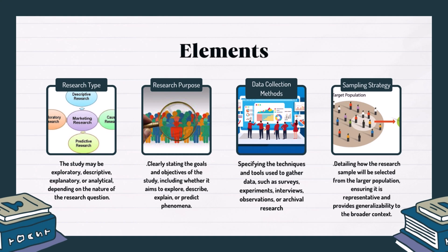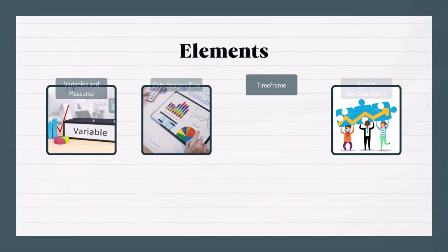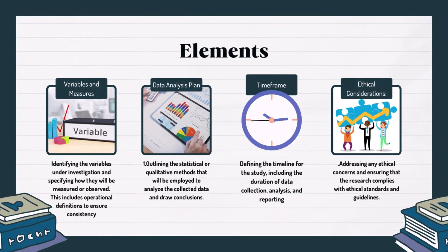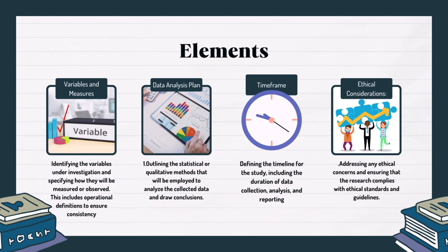4. Sampling strategy. Detailing how the research sample will be selected from the larger population, ensuring it is representative and provides generalizability to the broader context. 5. Variables and measures. Identifying the variables under investigation and specifying how they will be measured or observed. This includes operational definitions to ensure consistency.